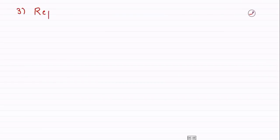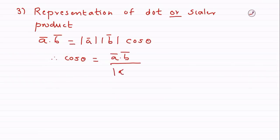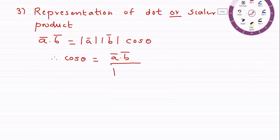Similarly, we can see another concept in vector algebra: how to use the dot product to find the angle between two vectors. It is given by a-bar · b-bar = |a-bar| · |b-bar| · cos θ, so cos θ = (a-bar · b-bar) / (|a-bar| · |b-bar|).